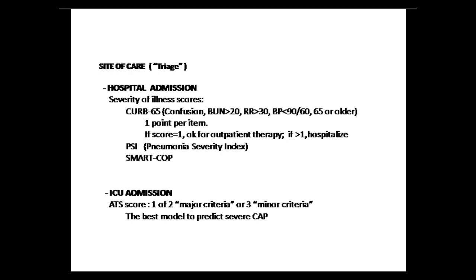To decide the site of care — the triage — we use severity of illness scores. The simplest one, which I use myself, is CURB65. It's British — C for confusion, U for BUN greater than 20, R for respiratory rate greater than 30, B for blood pressure less than 90/60, and 65 for age 65 or older. Each item is one point. A score of one means outpatient therapy is okay; greater than one means hospitalize.